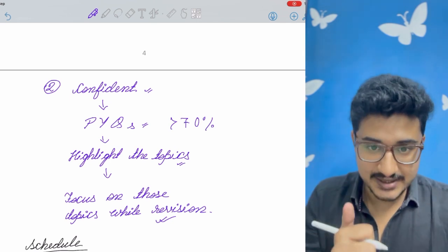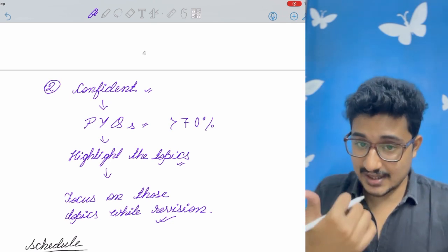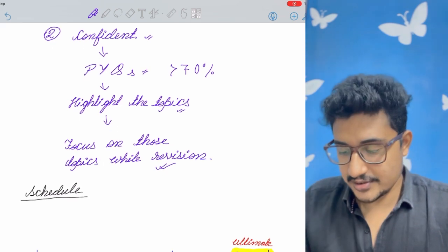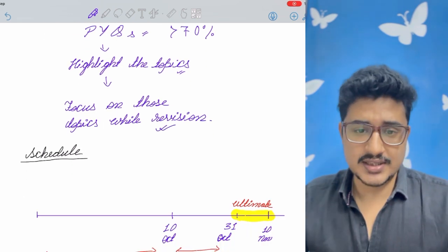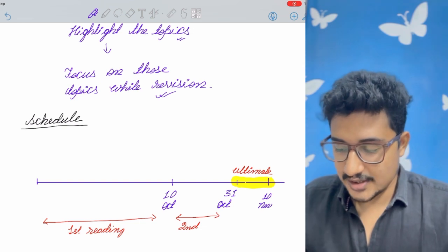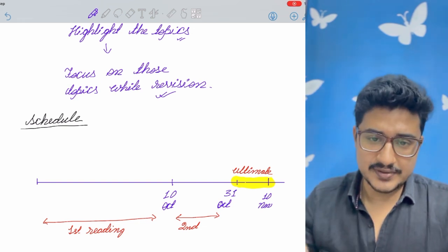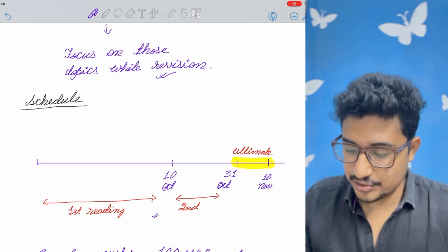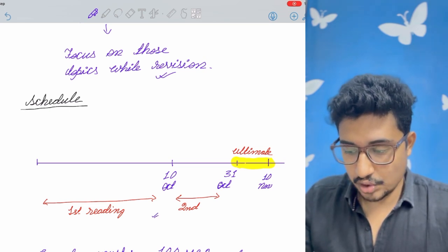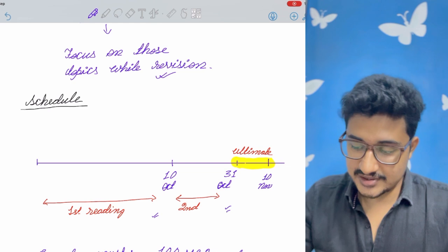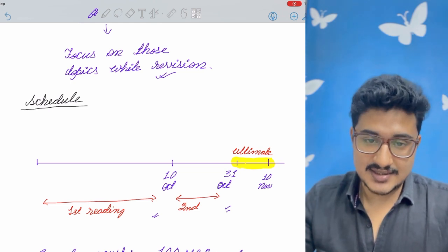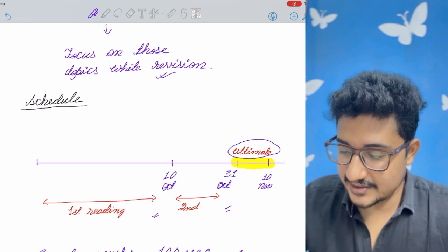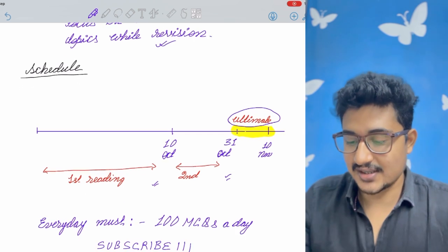And if you ask, give one schedule. Within how many days we should complete. So 10th November as of is a tentative date for INICET November. So first reading you should complete by 10th October. The second reading by 31st of October. And in the last 10 days, that is the main revision. The ultimate revision you should do in the last 10 days.